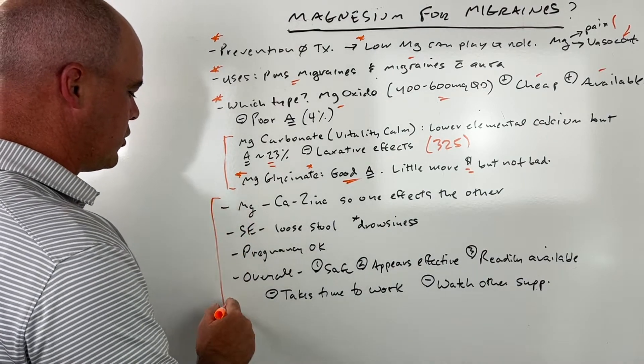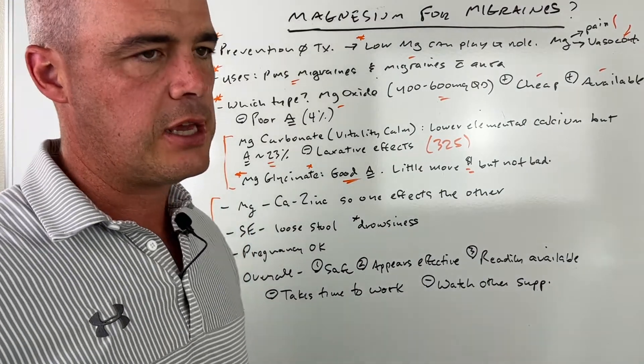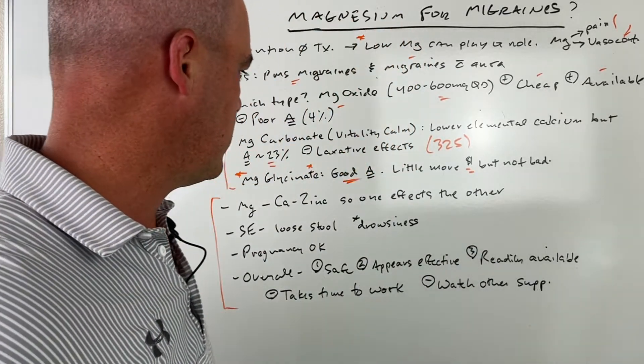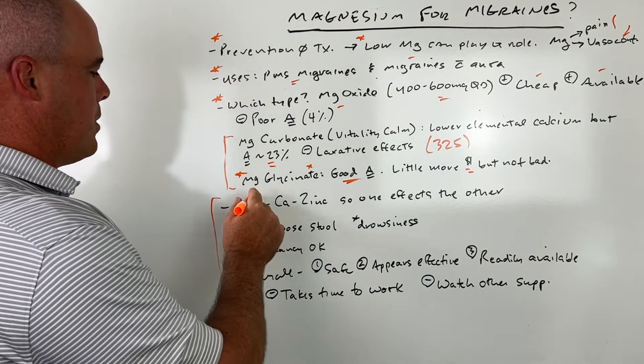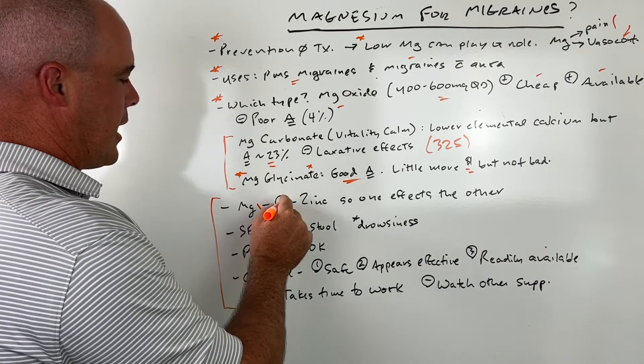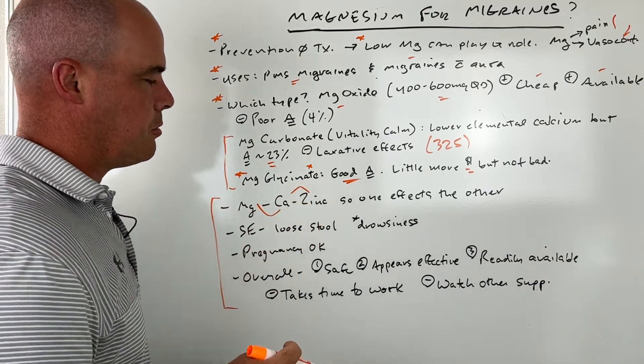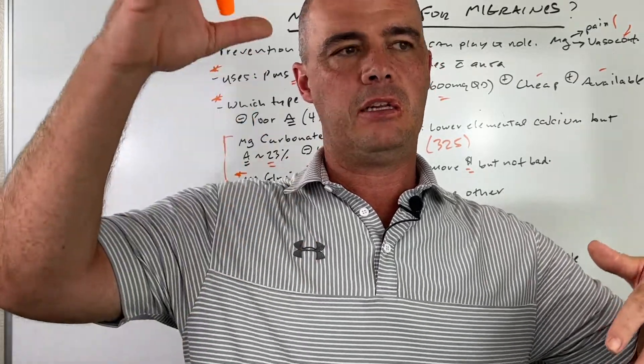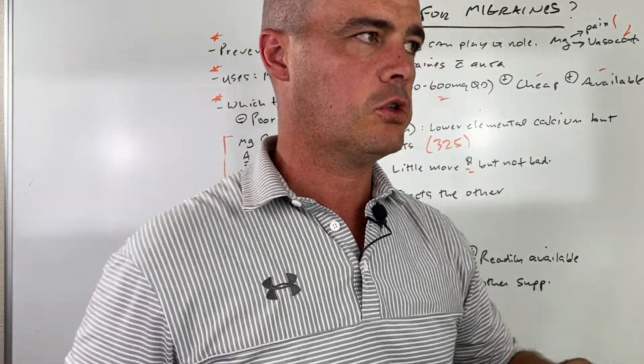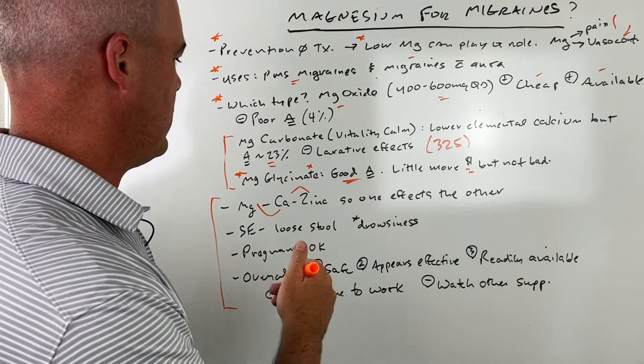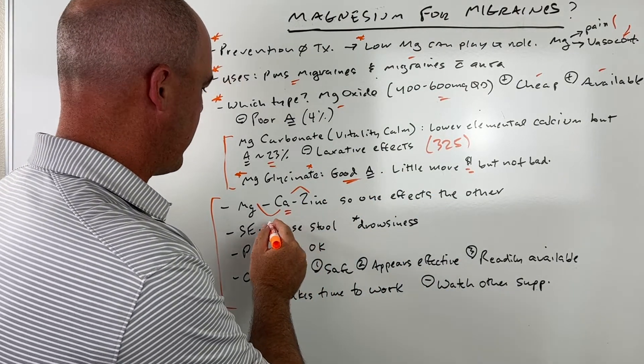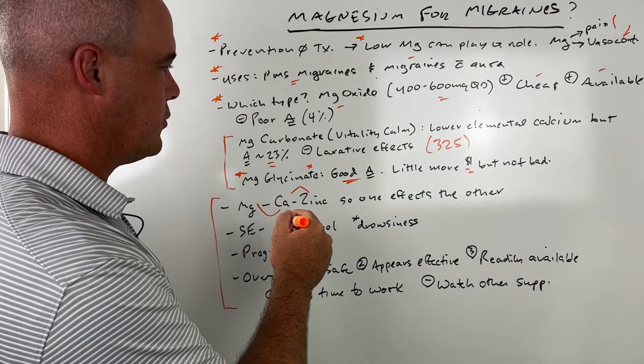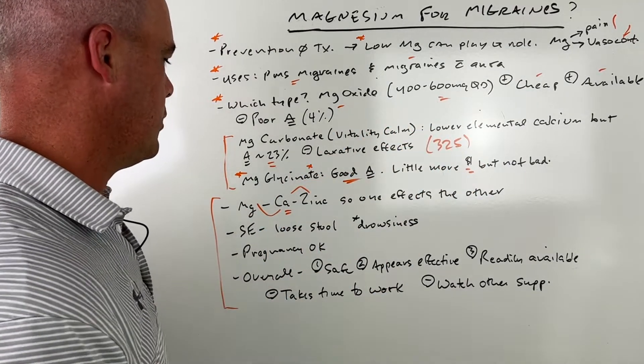Now let's talk about some of the things you have to take into consideration should you and your doctor choose to try magnesium. One of which is that magnesium interacts with other compounds in your body, namely calcium and zinc. We have this balancing act. Magnesium's up, calcium and zinc can go down and vice versa. So if you're taking calcium, you'll want to take that into consideration, they affect each other.